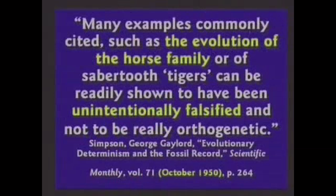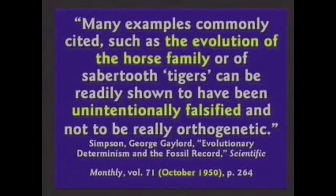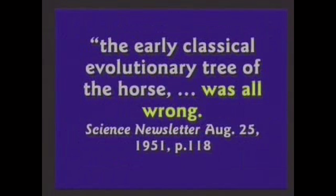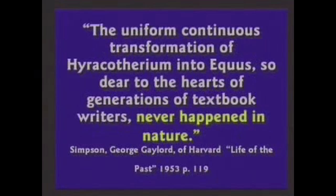But back in 1950, G.G. Simpson, who believed in evolution, said this evolution of the horse family was unintentionally falsified. The evolution of the horse was all wrong. Over 50 years ago it's proven wrong. It never happened in nature. Why do they keep putting it in the books?